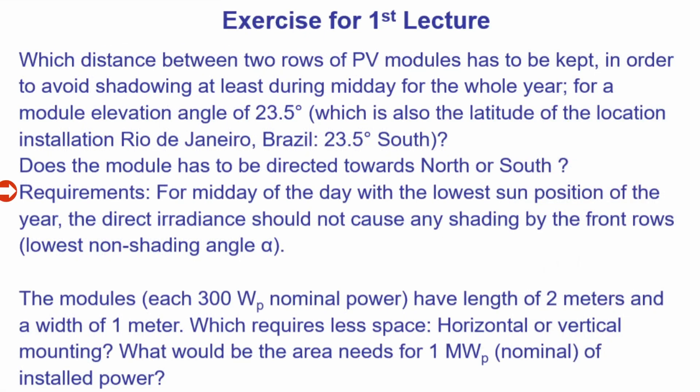So the requirements for midday of the day with the lowest sun position of the year, as I just explained, it's 21st of June. The direct irradiance should not cause any shading on the first rows of the module. So this means this alpha, as you saw on this graph before, this should be exactly as high as the sun on midday on the lowest position of the sun.